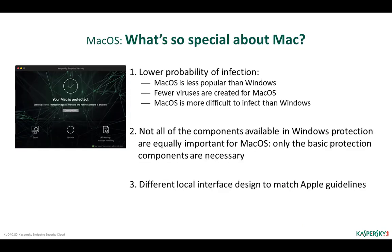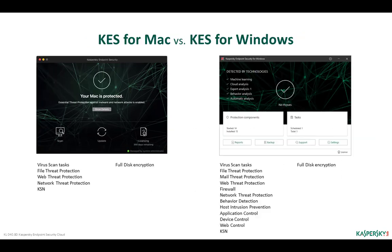Kaspersky Endpoint Security for Mac is a counterpart of Kaspersky Endpoint Security for Windows that takes into account operating system specifics. Mac OS can be considered a safer system, and there are fewer protection components for it: virus scan tasks, file threat protection, web threat protection, and network threat protection. They use signature analysis, which requires updates, and KSN. There are no control components, behavior detection, firewall, or mail threat protection.